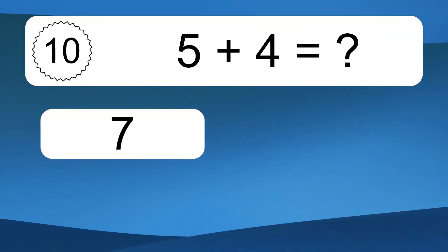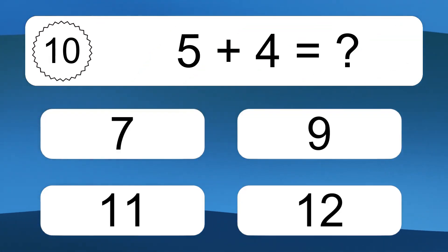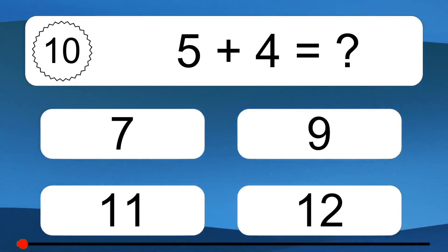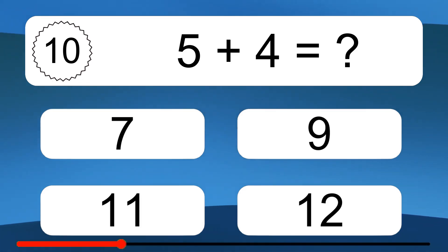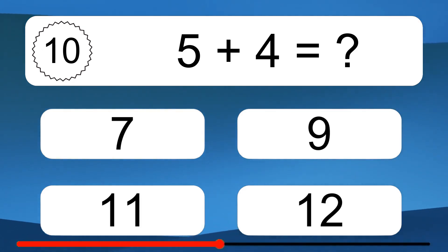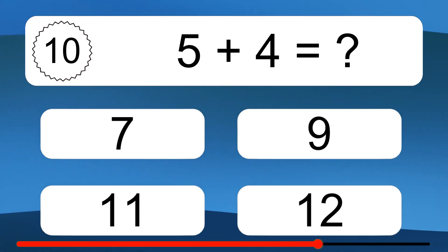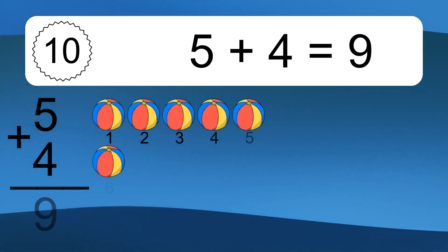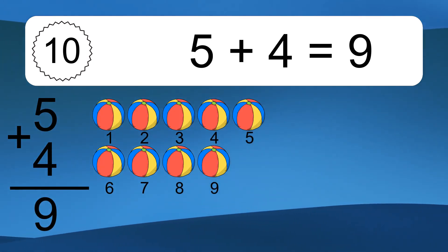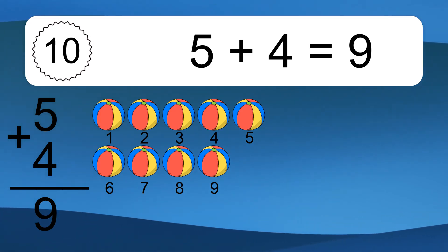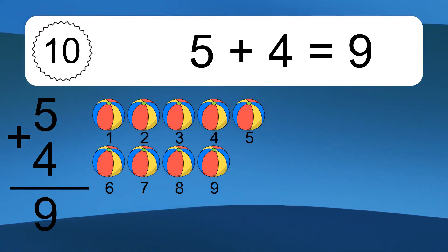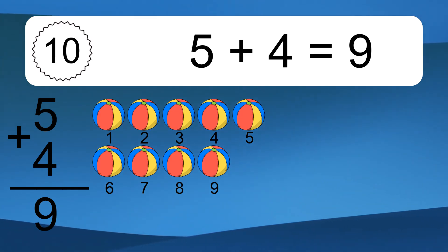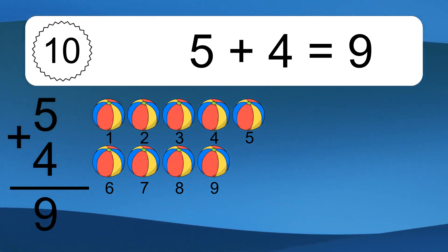5 plus 4 equals what? 5 plus 4 equals 9. Let's count it. 1, 2, 3, 4, 5, 6, 7, 8, 9.